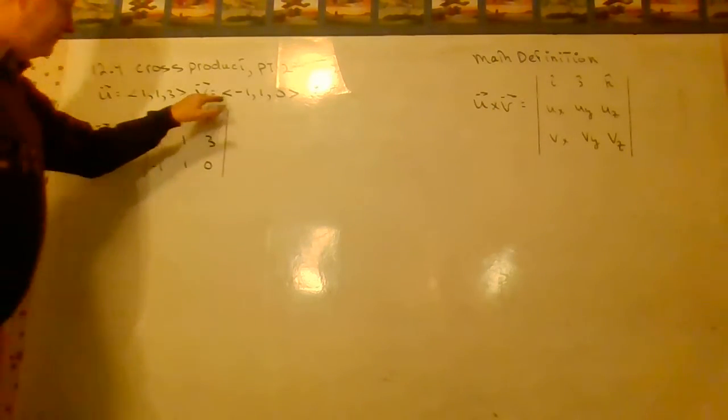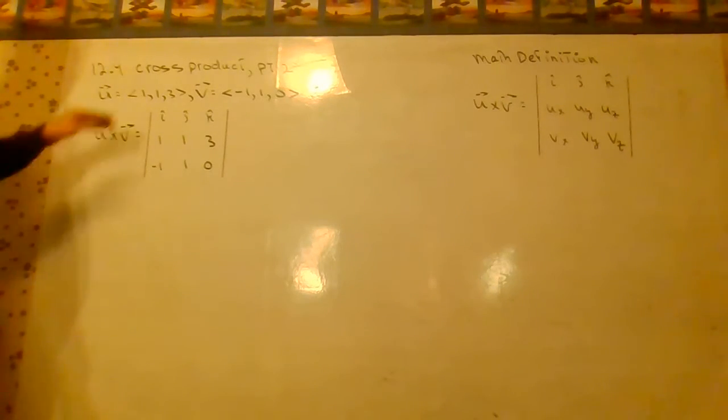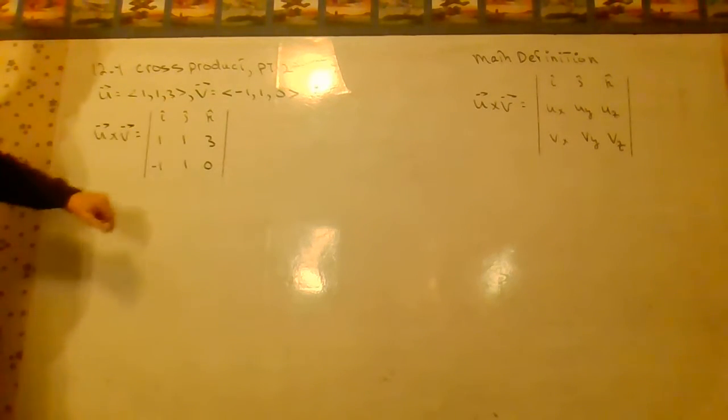Let's suppose U is 1, 1, 3, V is negative 1, negative 1, 0, and we put U in the second row of the determinant and V in the third row of the determinant.